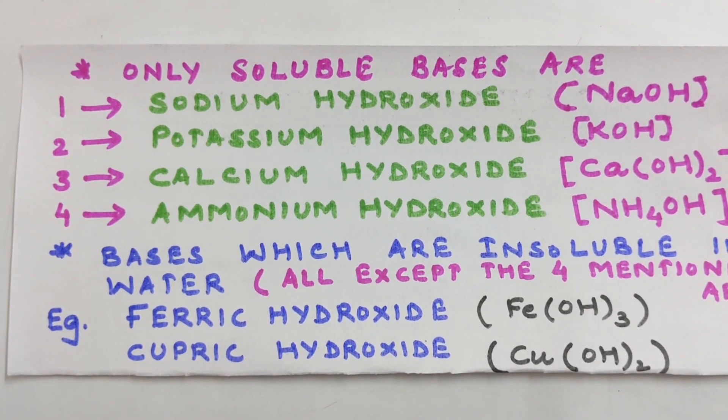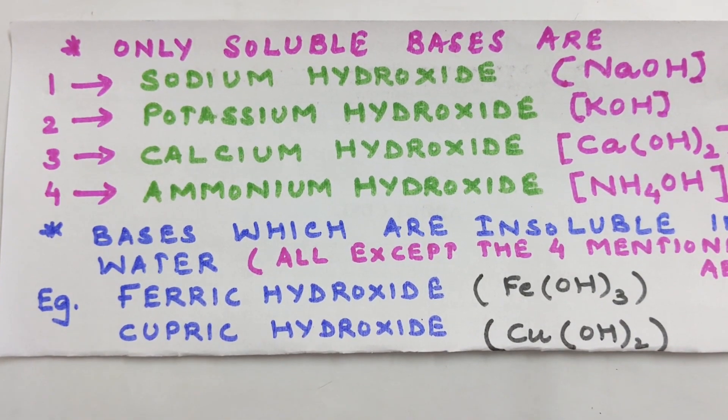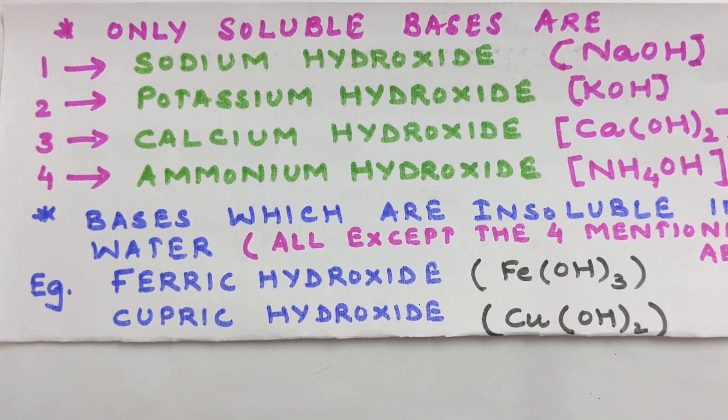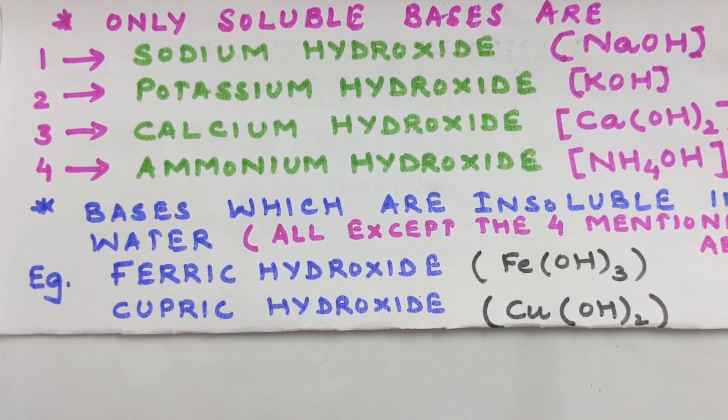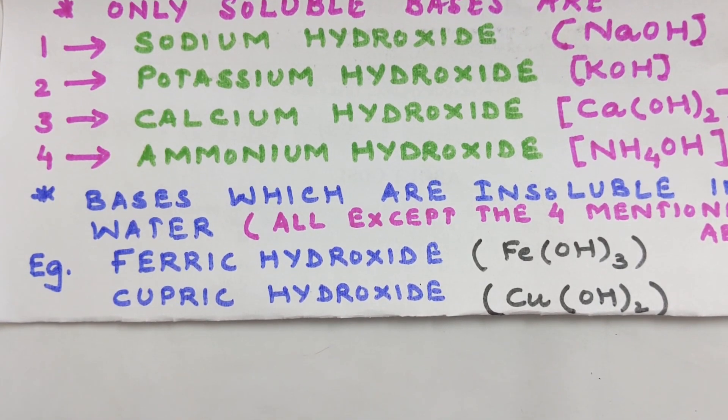Apart from these, the rest of the other bases are not known as alkalis. That means rest of the other oxides and hydroxides of metals are not alkalis. They are not soluble in water.